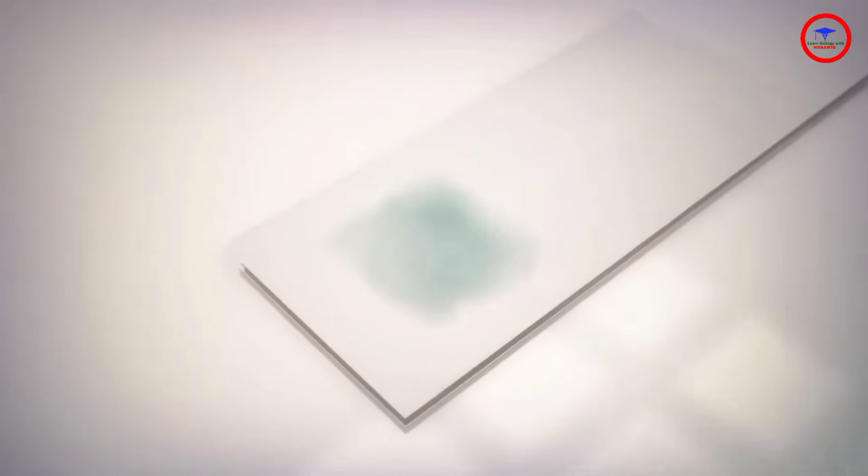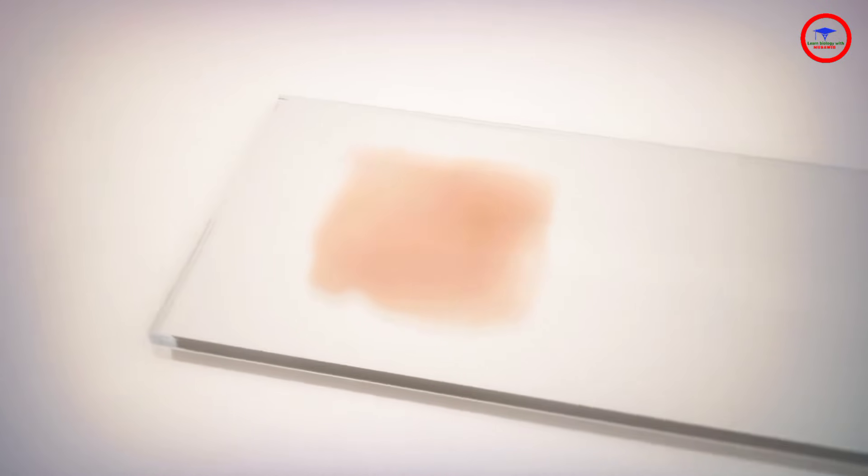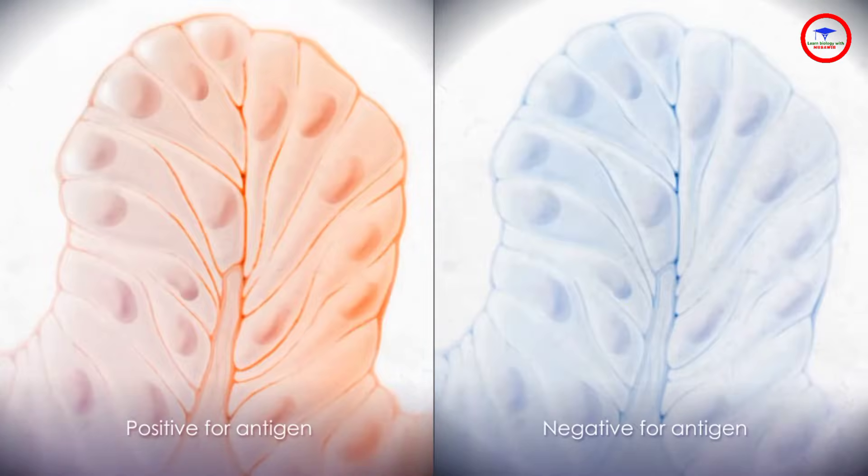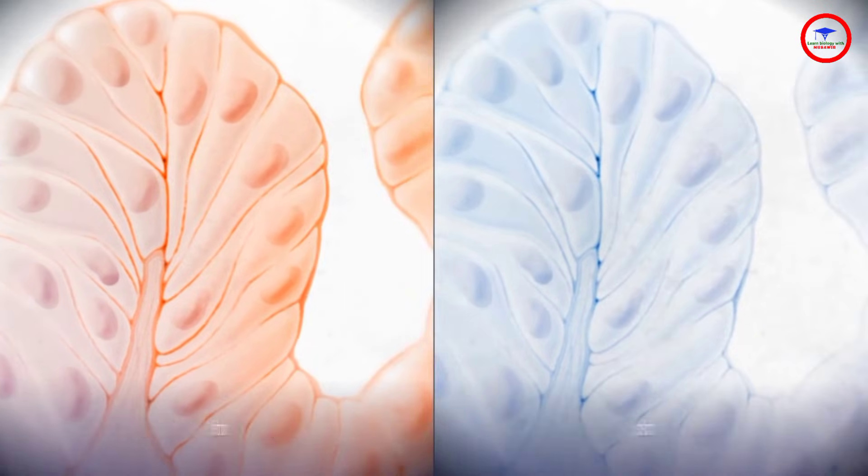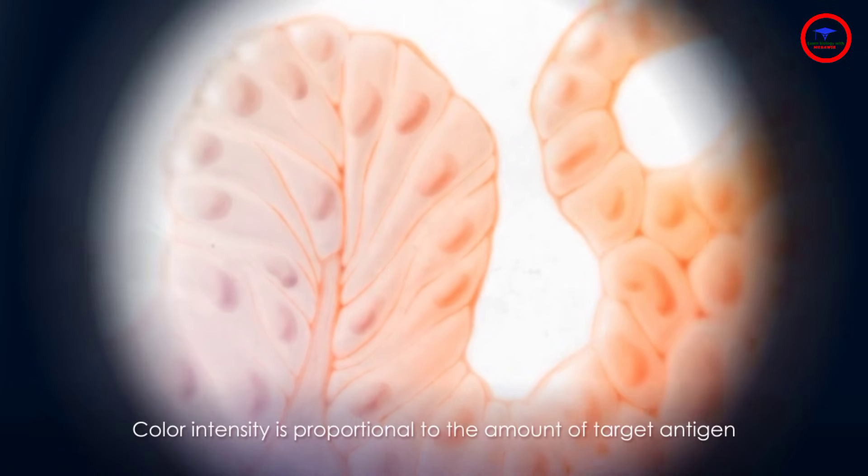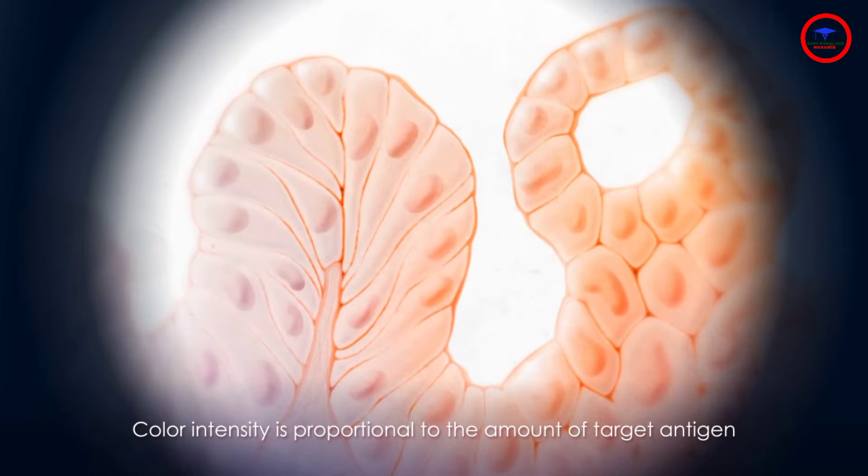The signal from the antibody-antigen interaction is visualized as a colored stain on the microscope slide, thereby confirming the presence or absence of the target antigen. The color intensity is proportional to the amount of the target antigen present in the sample and can be scored accordingly.